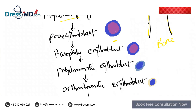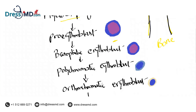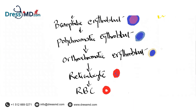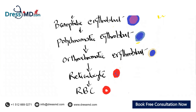Then you have the basophilic erythroblast. Basophilic means it is blue in appearance; it also has a big nucleus. Then there is the polychromatic erythroblast. If you look at the polychromatic stage, the color of the cytoplasm is gradually changing, and ultimately it will form the red color of the RBC.